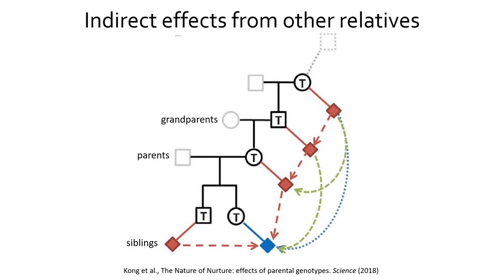It's not simply parents that can have indirect genetic effects on you though — it's also siblings, grandparents, etc. Any indirect effect from a relative can generate a bias in the estimate of the effect of a SNP, polygenic score, or heritability, as we'll go into later. That's because your genotypes are correlated with your relative's genotypes, so this inherently leads to gene-environment correlation when your environment is partially a function of the genes of your relatives.